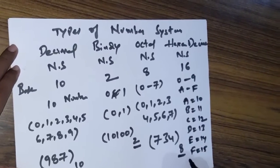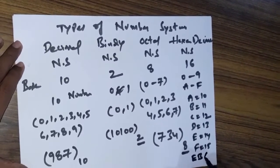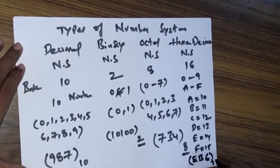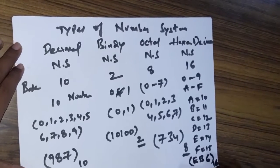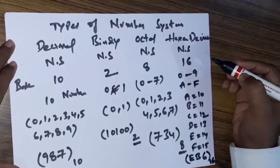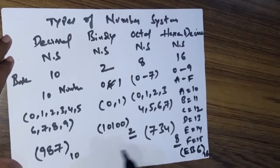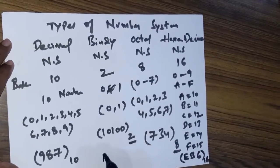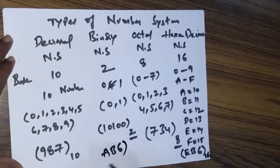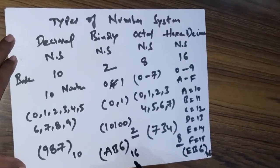To represent any hexadecimal number, we use these 16 symbols repeatedly. For example, EB6 enclosed with base subscript 16 — by seeing the 16, we can understand it is a hexadecimal number. One more example: AB6 enclosed with base 16 also means it is a hexadecimal number.